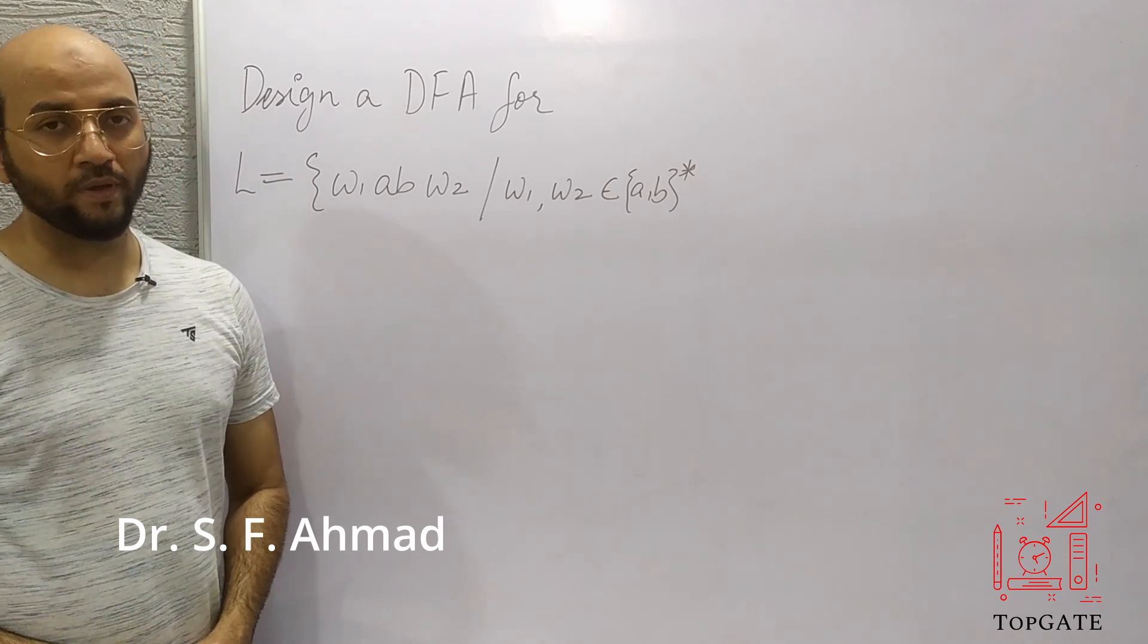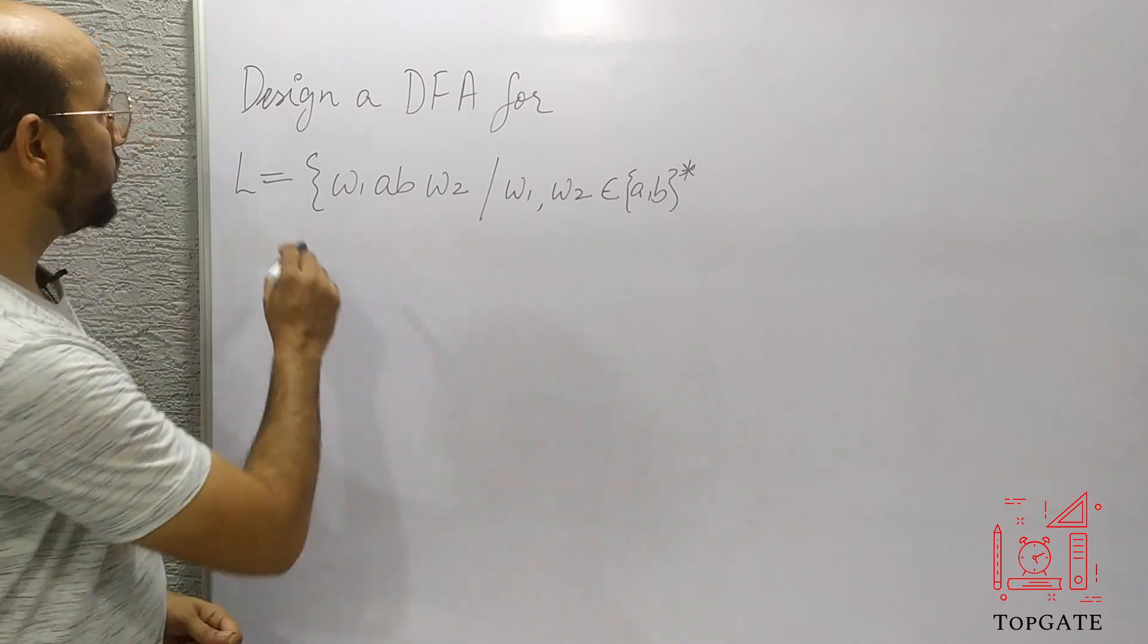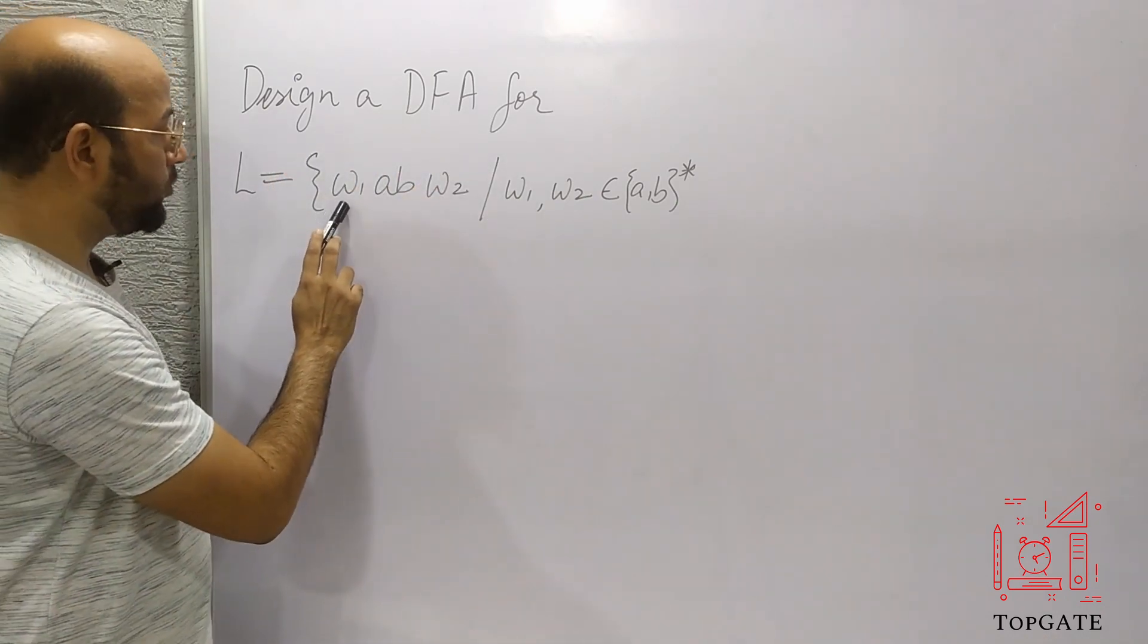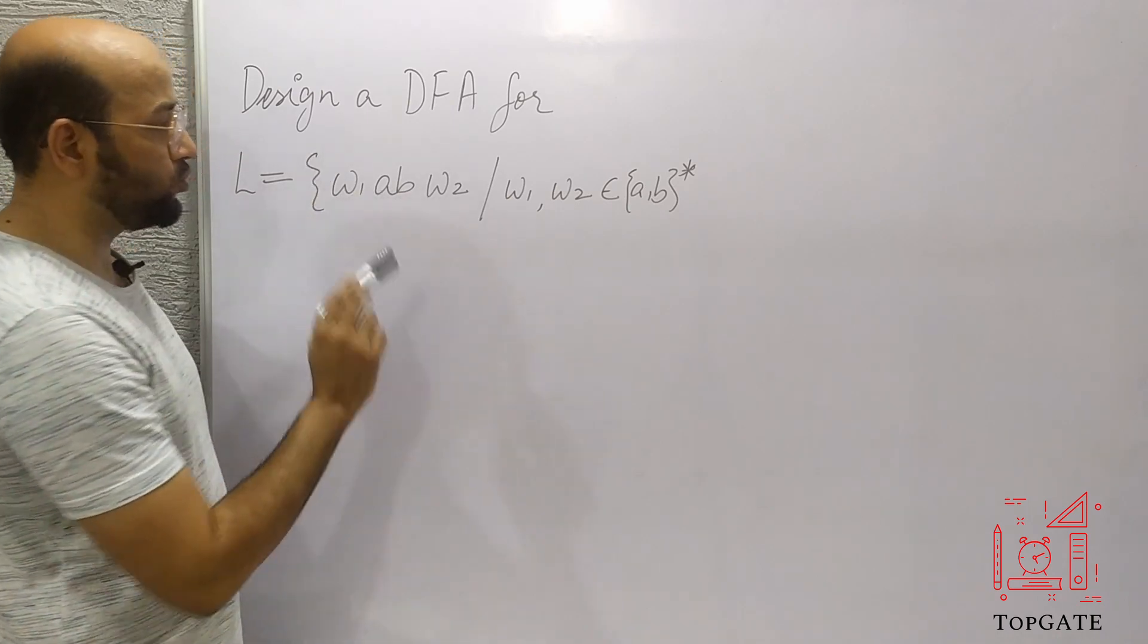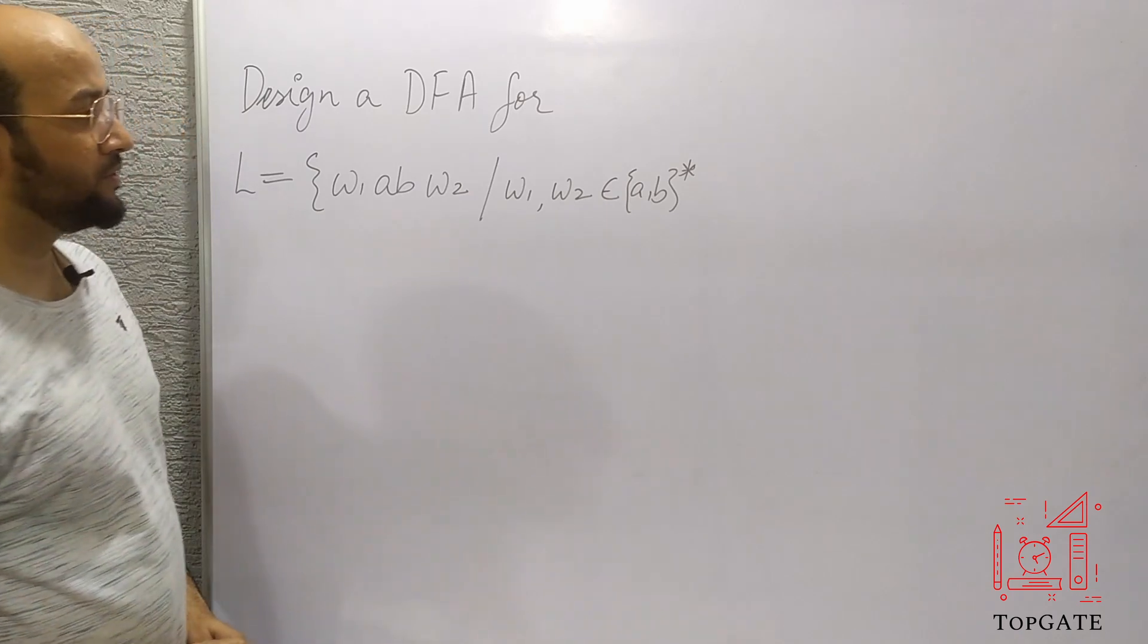Hello students, welcome to the channel Topgate. In this video I will discuss one more problem of DFA, that is to design a DFA for the language L equals W1ABW2, where W1W2 belongs to A, B star.